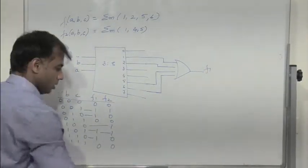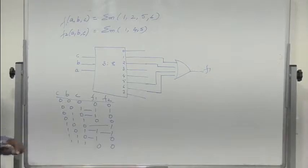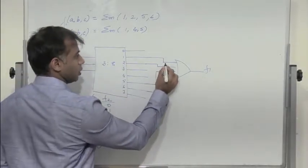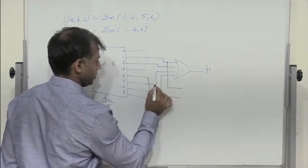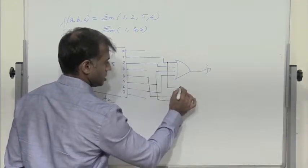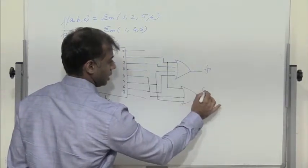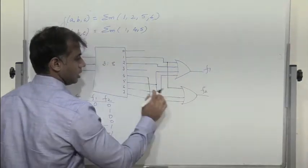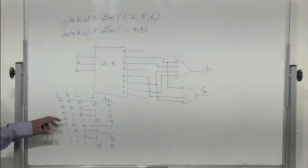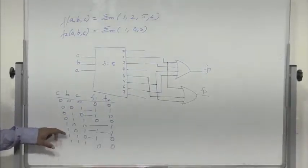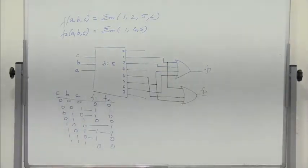Similarly, for F2, we take the combinations 1, 4, and 5, and pass them through a 3-input OR gate to get F2. So here we use a 4-input OR gate for F1, and a 3-input OR gate for F2. F1 is high for combinations 1, 2, 5, and 6, and F2 is high for combinations 1, 4, and 5.